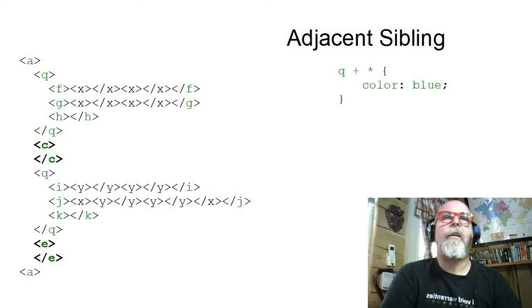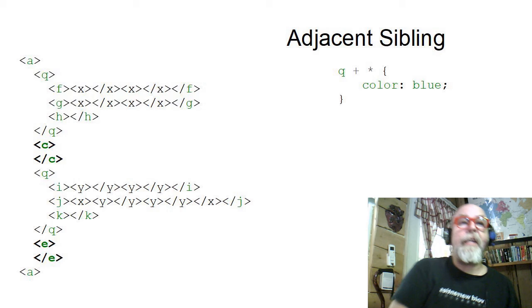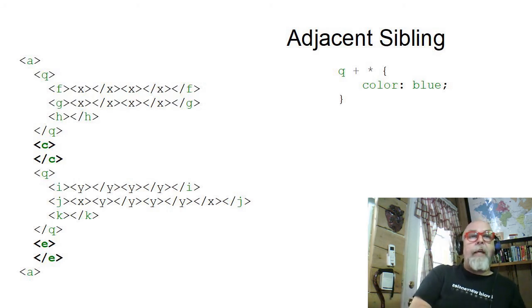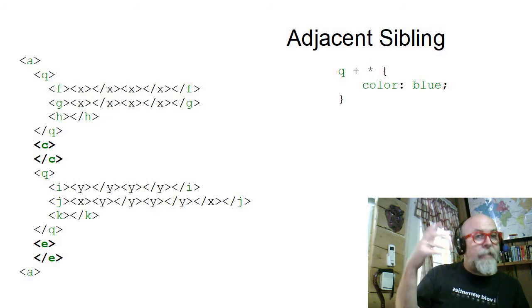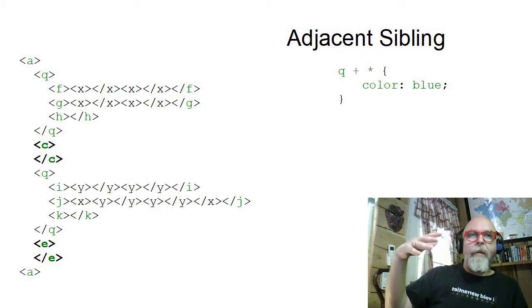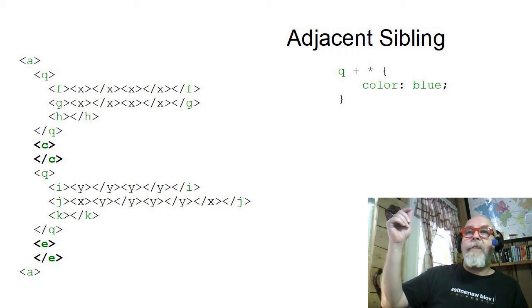Let's take a look at what that looks like. Up above, I have the combinator of Q plus star. So that says find all the Q tags, and then find the next element that's the child of the same level, that's the sibling of the same level, the direct sibling, adjacent sibling.